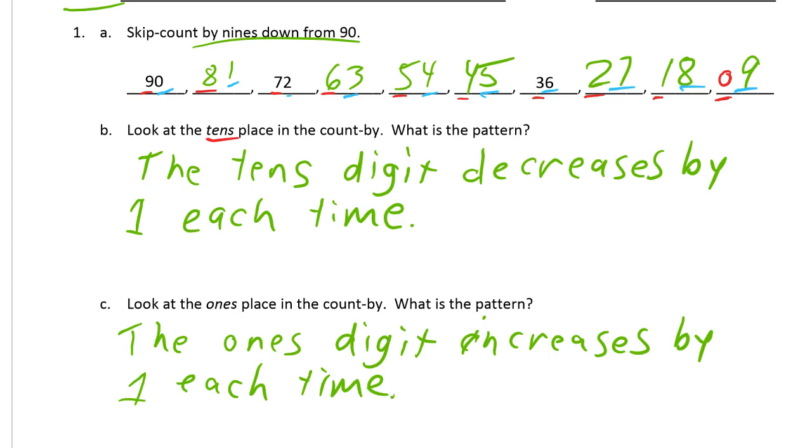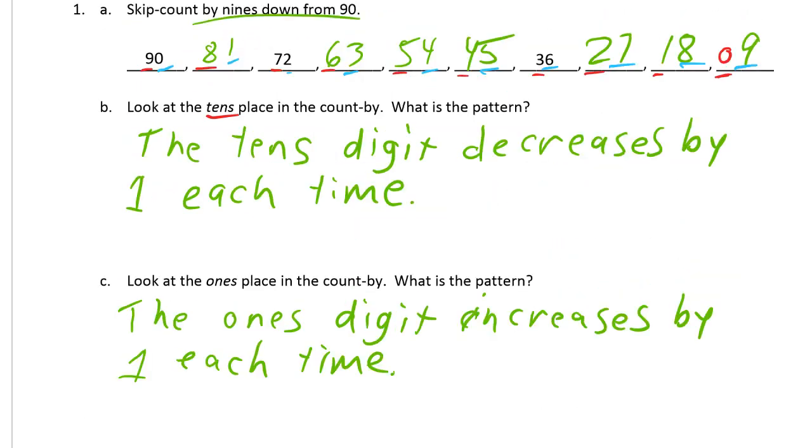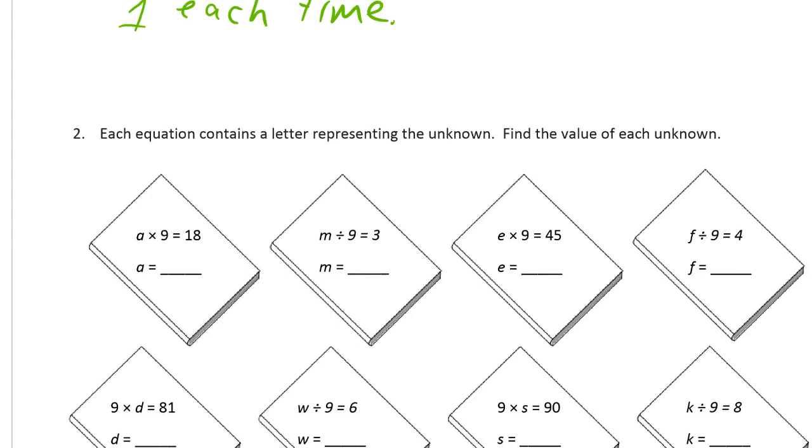And this is a byproduct of what we figured out last time where you could figure out nines by thinking of tens and subtracting one multiple, right? If you want to figure out nine fours, think of what's 10 fours. That's 40 and subtract the four. That's why the tens go down and the ones go up. And you'll notice that each time the digits, like nine plus zero adds up to nine, eight plus one adds up to nine, and seven plus two adds up to nine. The digits all add up to nine. There's lots and lots of patterns for nines that you can use to figure them out if you don't remember them.